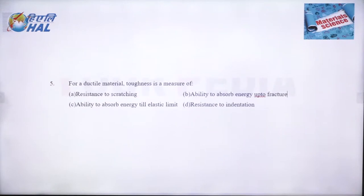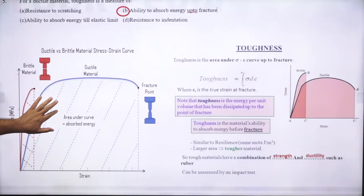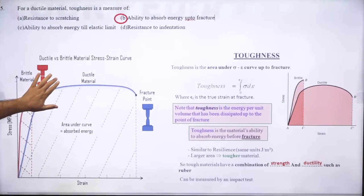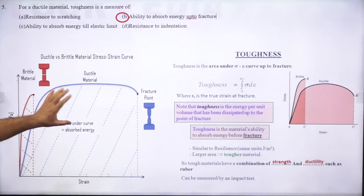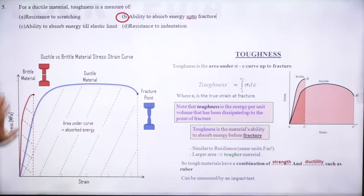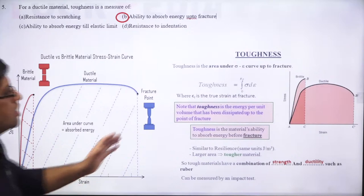Question five: for ductile material, toughness is the measure of what? It is the ability to absorb energy up to the fracture point. The area up to the elastic limit is modulus of resilience; the total area (elastic plus plastic) is modulus of toughness. Normally toughness is calculated for ductile material and resilience for brittle material. To find the total area, consider an elemental strip of width d-epsilon and height sigma, then integrate sigma d-epsilon from 0 to the fracture strain epsilon-f.